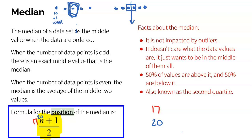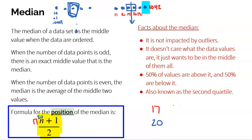The formula N plus 1 divided by 2 does not tell you what the median is — it tells you where to look to find it. The nice thing about the median is it's not impacted by outliers. This high value could be an outlier — like your other values could be 11, 10, 15, 16, 18, and then this one is 1,046. That doesn't matter. The median doesn't care that you have an enormous outlier. It just wants to be in the middle. So huge outliers, low or high, will not impact the median at all. It represents the middle: 50% of values are above it, 50% of values are below. It's also known as the second quartile.